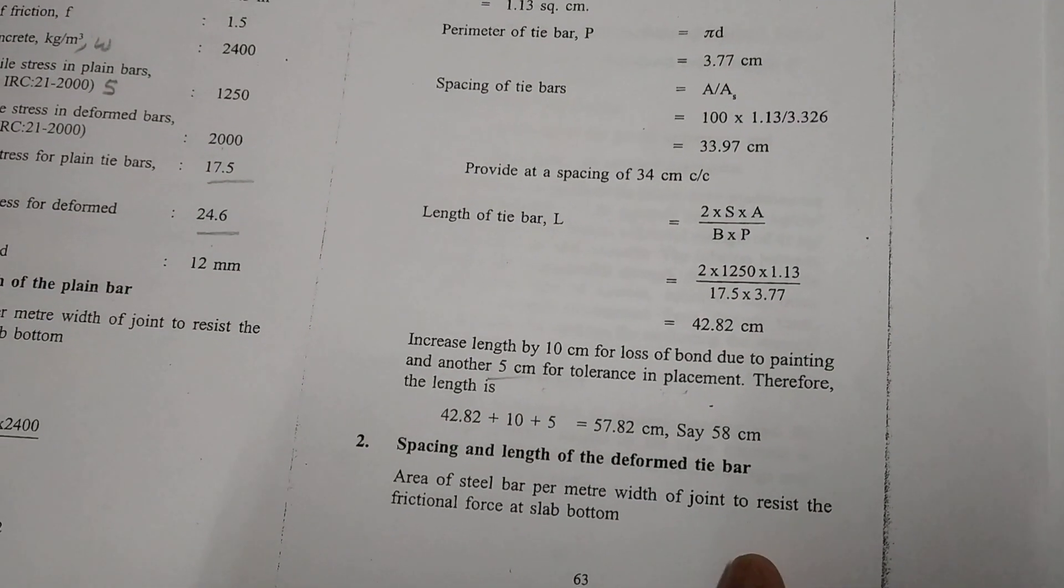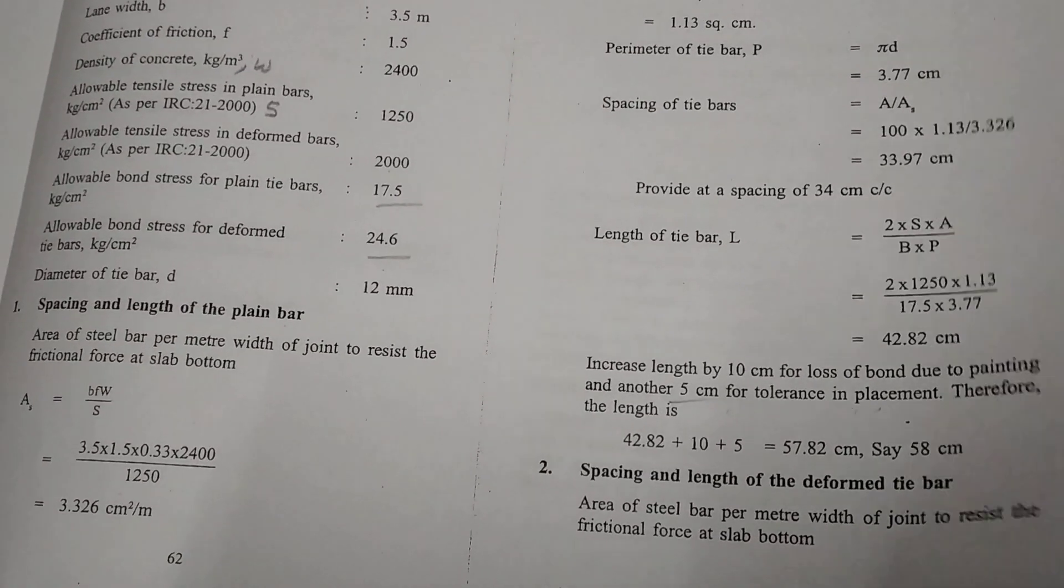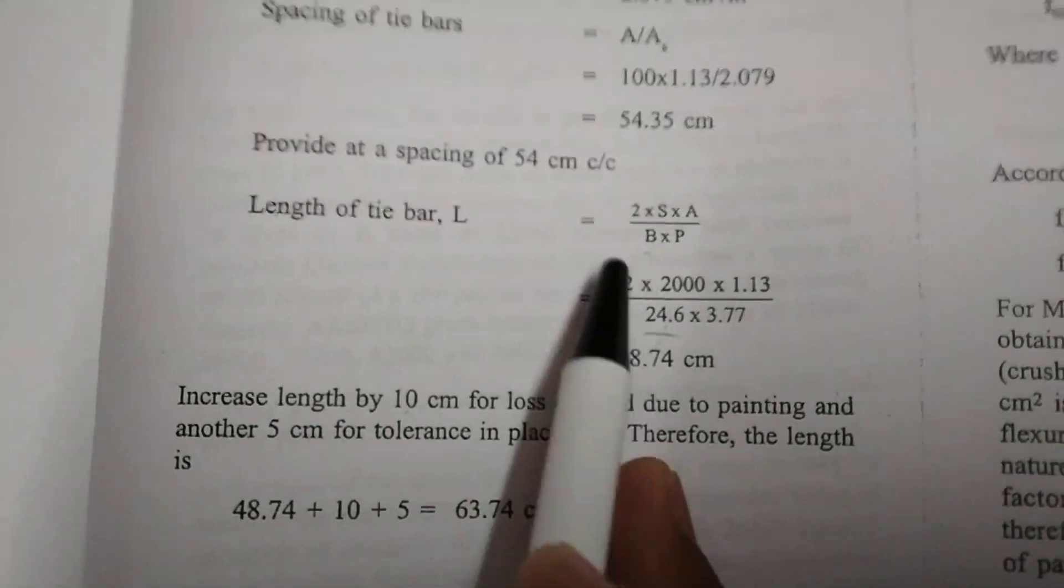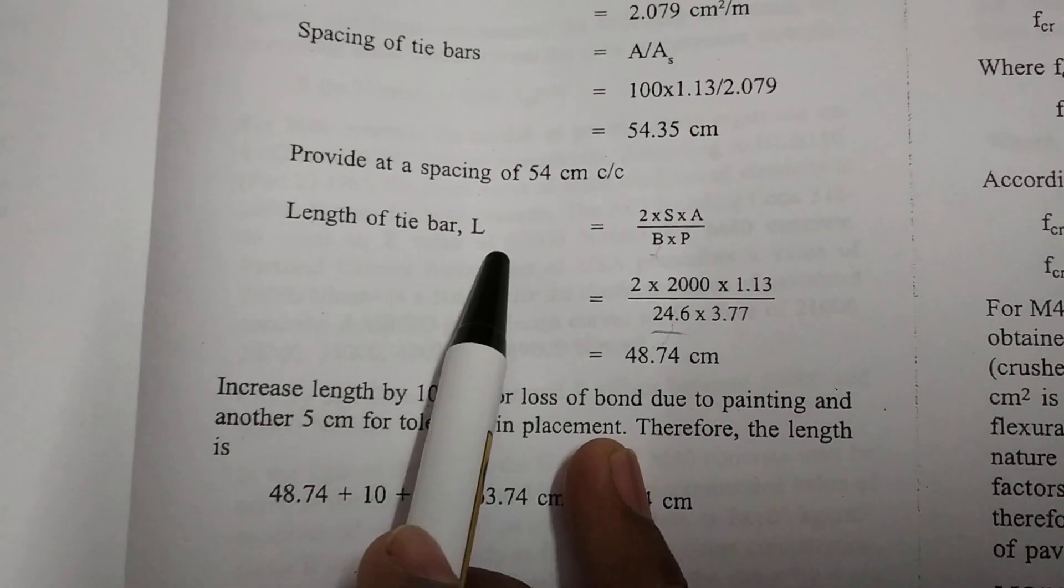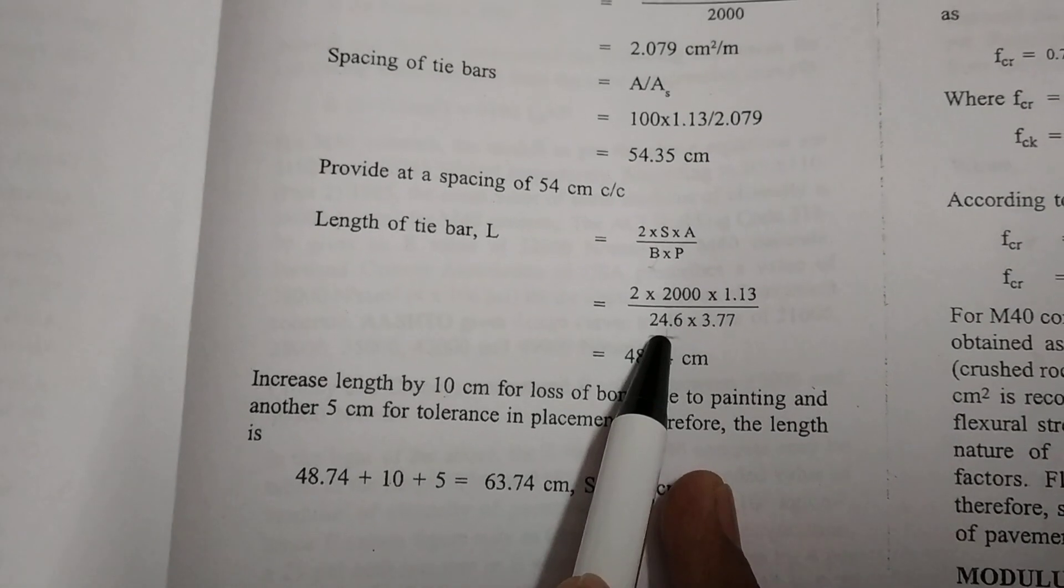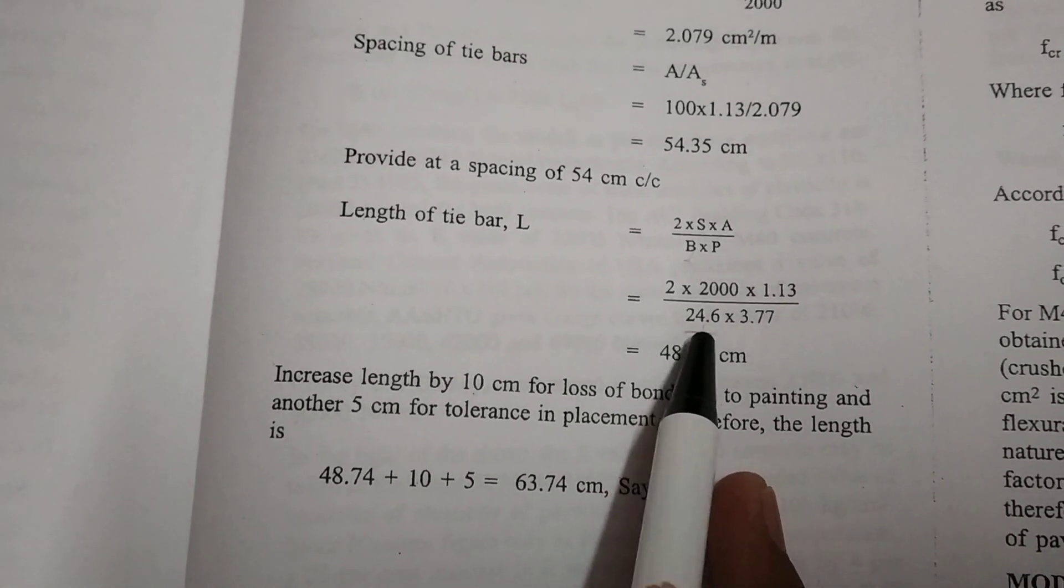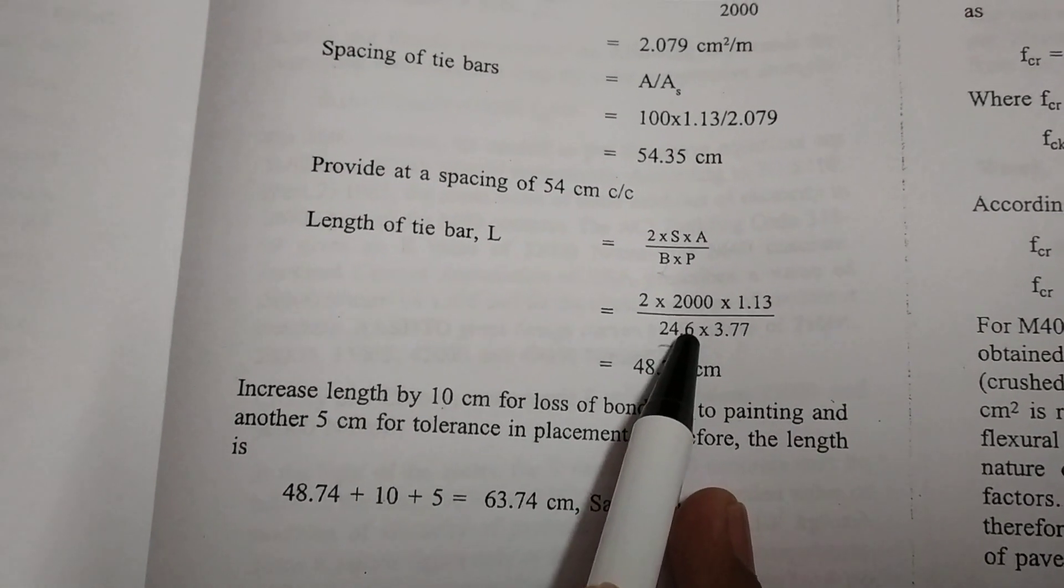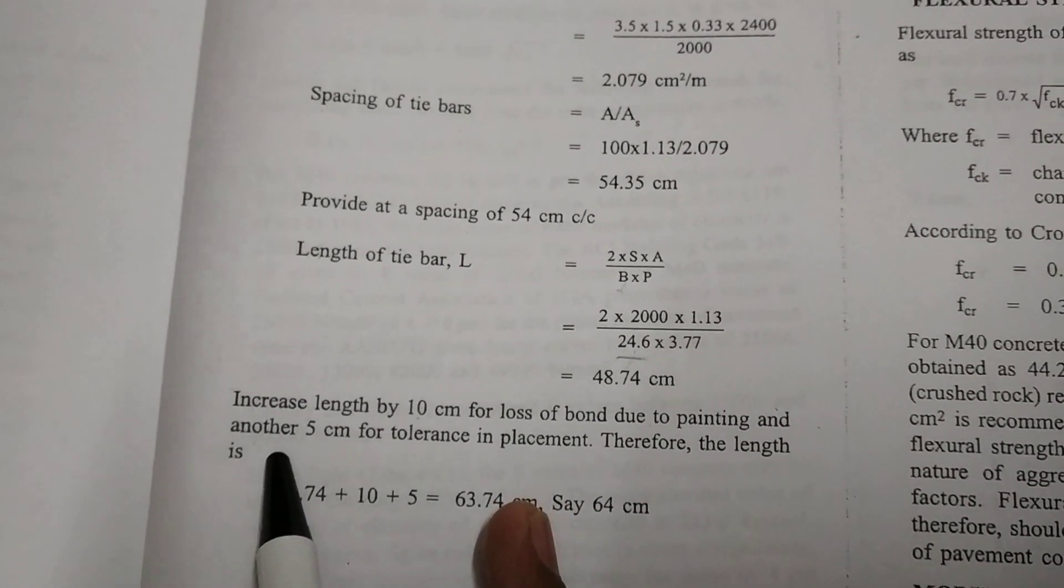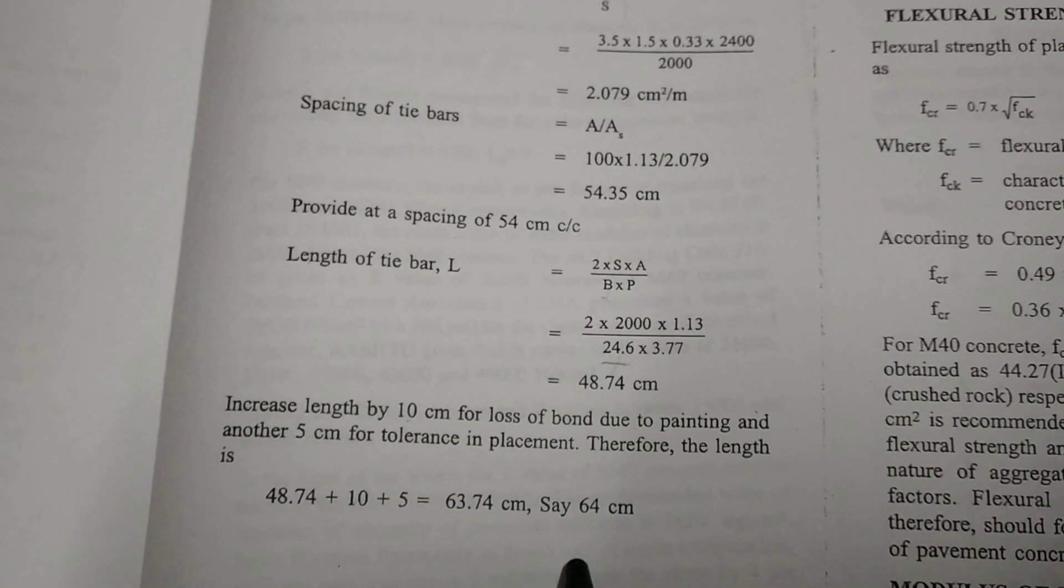It is similar to the plain bars only. The difference is here while we are calculating length of the tie bar, you have to substitute 24.6 which is the standard value for deformed tie bar. So 10 and 5 are the standards. You have to substitute all the values as usual.